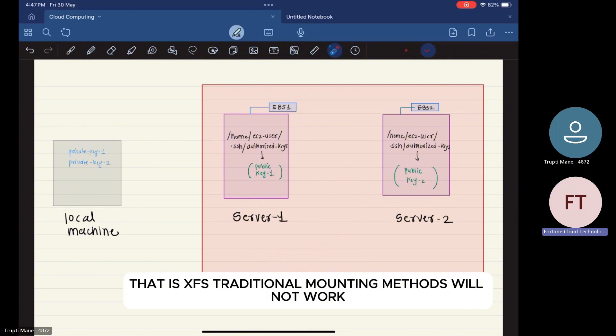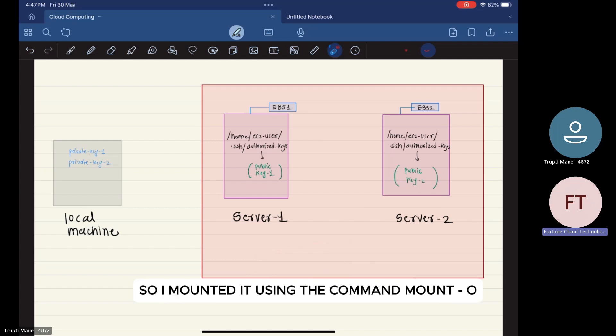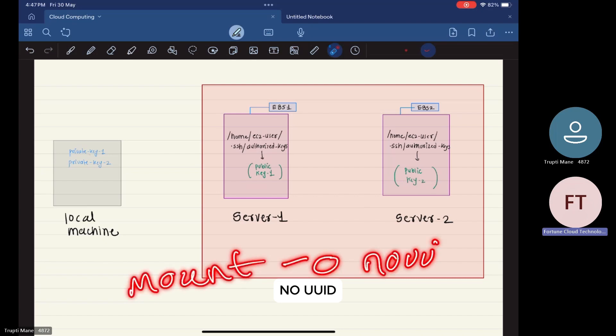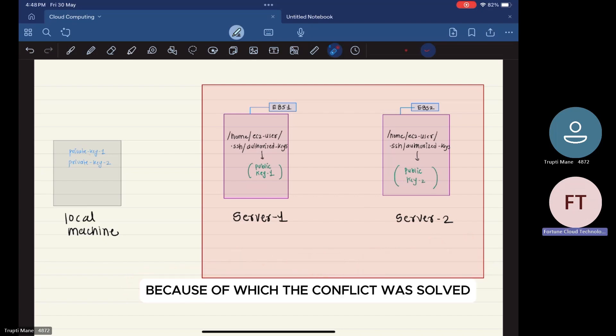Traditional mounting methods will not work because of the UUID conflict. So I mounted it using the command mount -o nouuid because of which the conflict was solved.